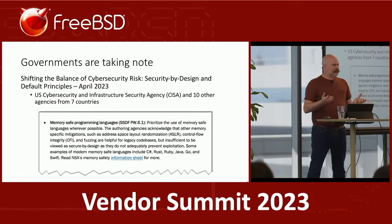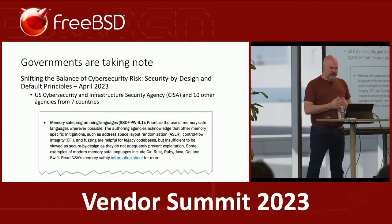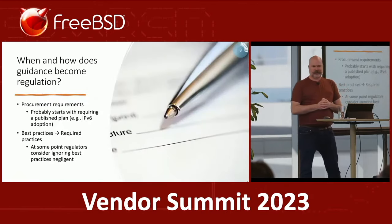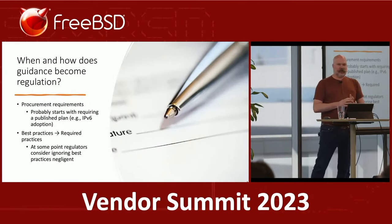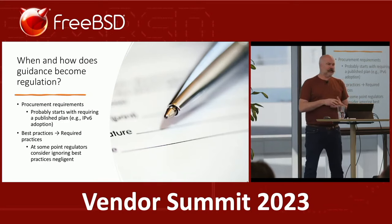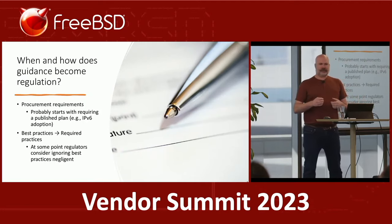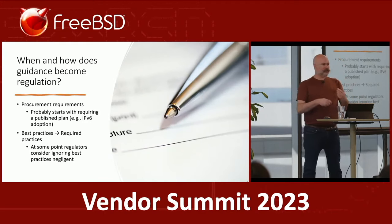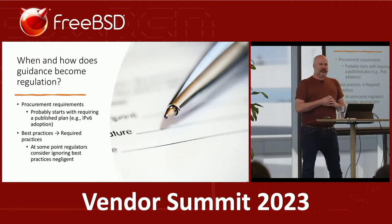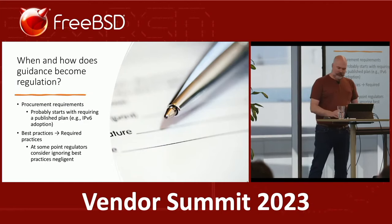CISA says to move to modern memory-safe programming languages now. As a project written in C, this is a challenge for us. We need to worry about that. When does guidance become regulation? One way it starts to become regulation is when it becomes a procurement requirement — as happened with IPv6, it starts as a requirement to have a plan to migrate, then becomes best practice, then sometimes becomes a hard requirement.